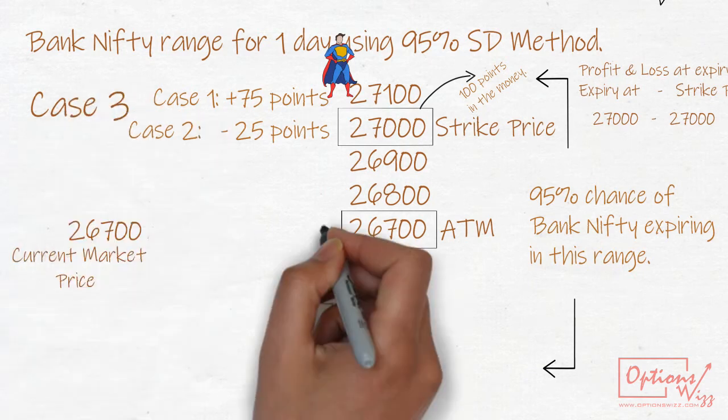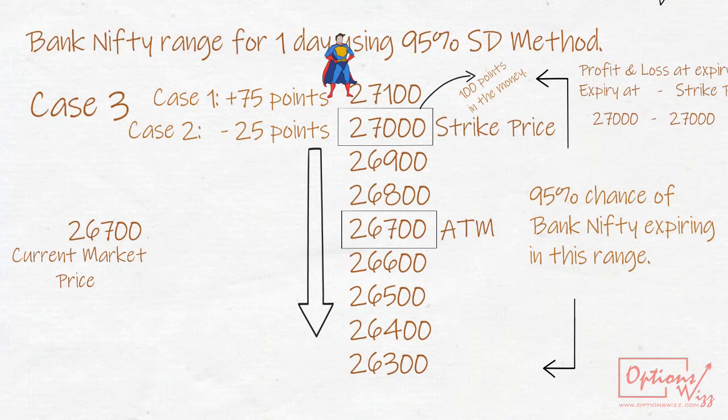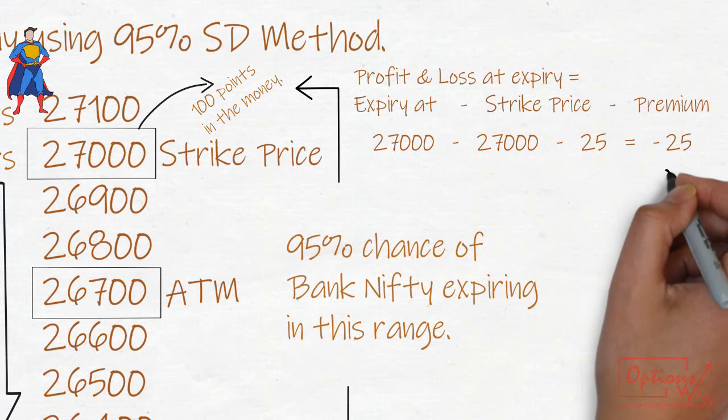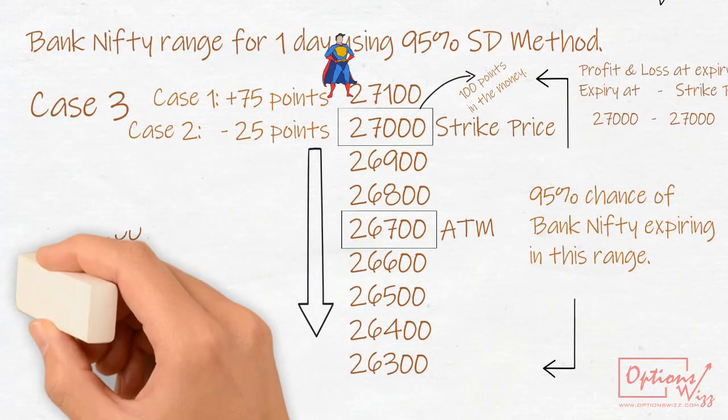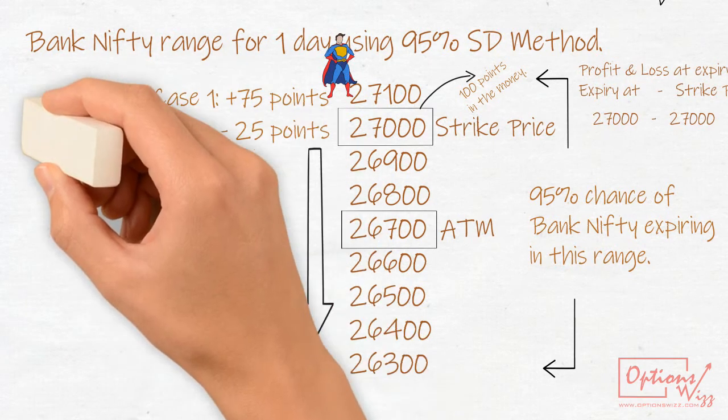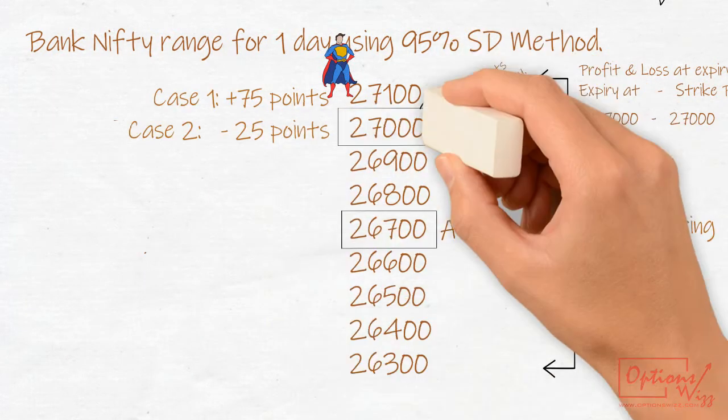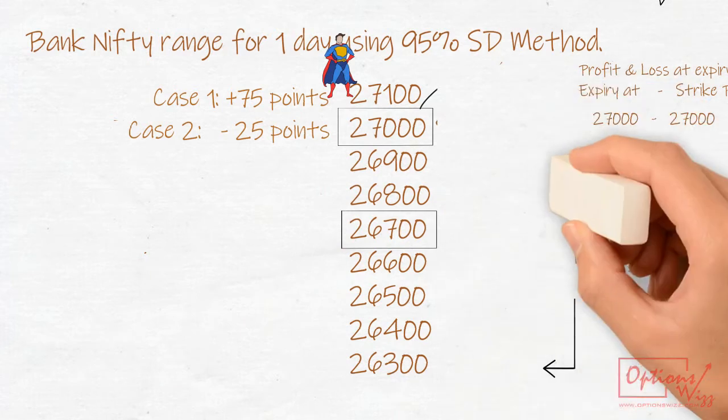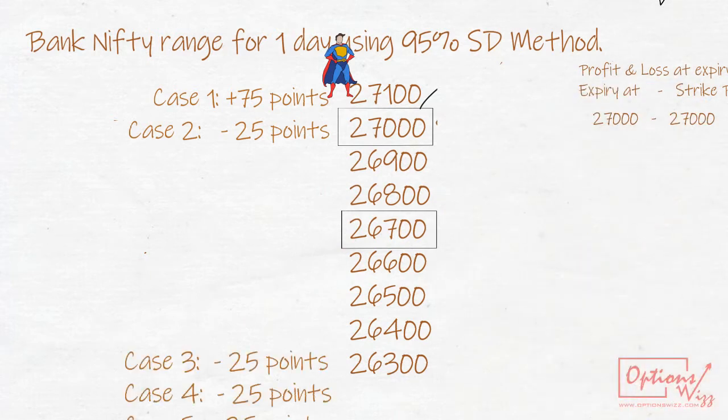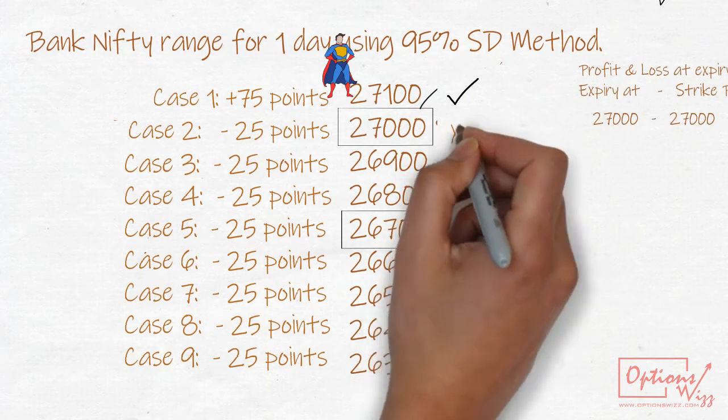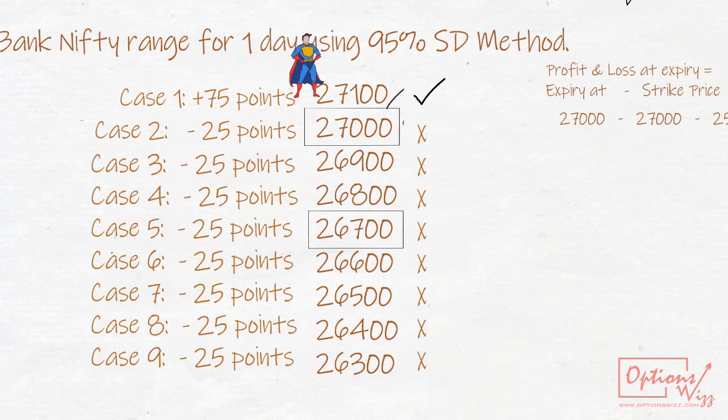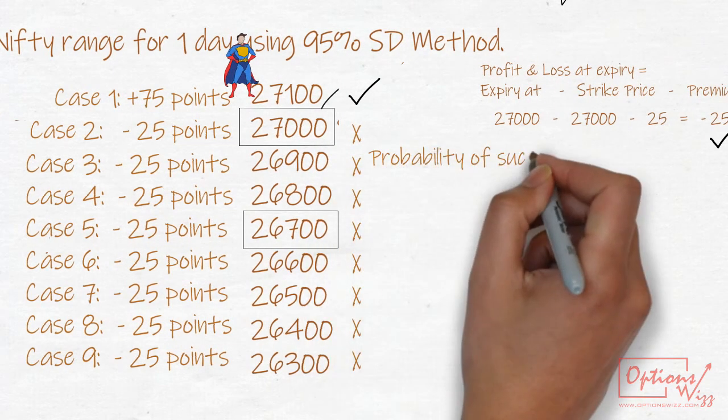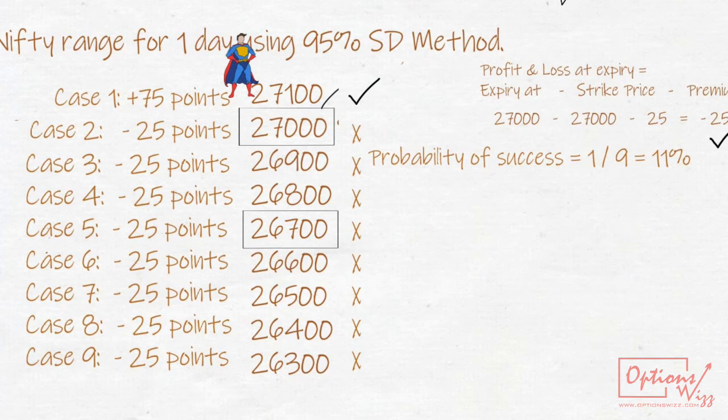Case 3: Bank Nifty expires below 27,000. All the strike prices below 27,000 will be out of money and will have no value. So P&L in this case will be negative 25 points. Here you can see, out of 9 cases, only 1 case can make you hero, rest all 8 cases will make you zero. So probability of success in this case is 1 out of 9, or just 11%.